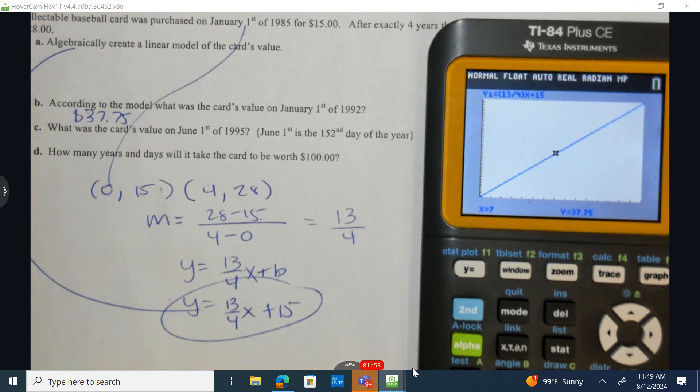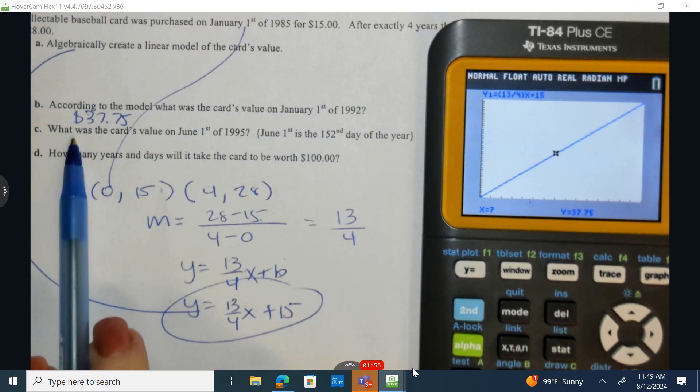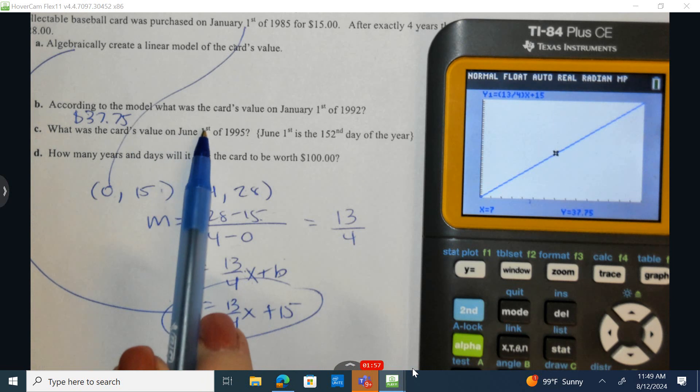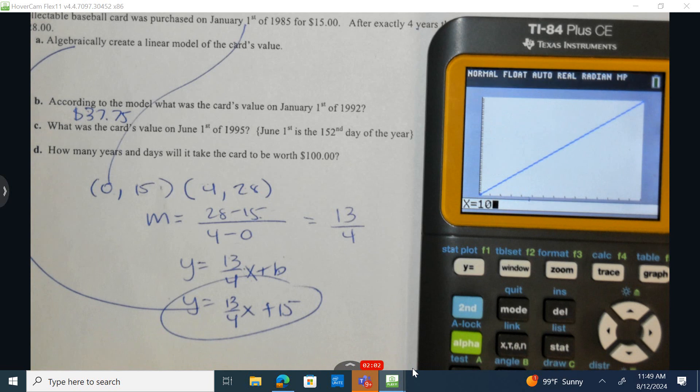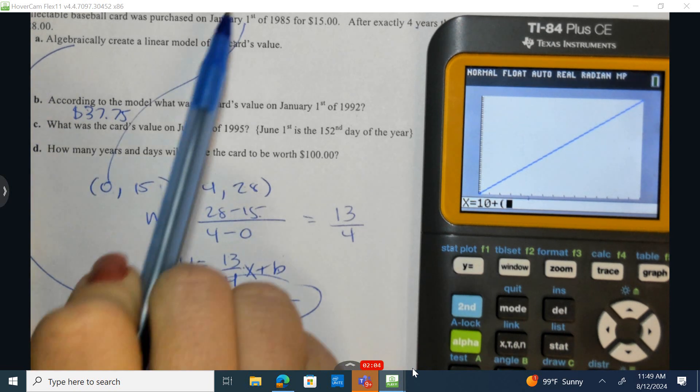We can approximate the value of the card on this particular date. What is the value of the card June 1st, 1995? Well, this is a difference of 10. So the whole number is going to remain at 10, but then we get this partial because it's not January 1st.